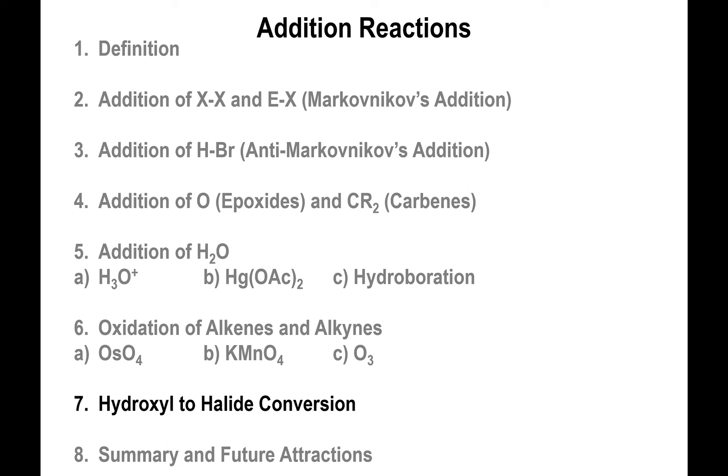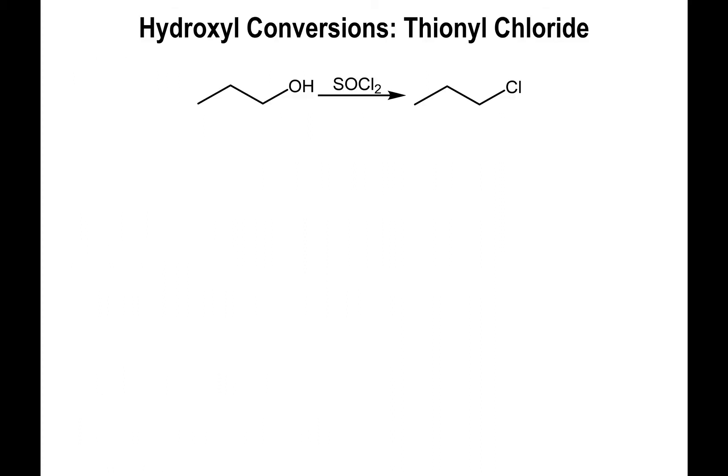We're back. We have one more topic to mention. This will be more important in the context of synthesis in general, more so than oxidations or treatments of alkenes. We've talked a lot about turning alkenes into alcohols — sometimes via Markovnikov additions, maybe anti-Markovnikov additions, and sometimes using oxidizing agents like potassium permanganate or osmium tetroxide. In any case, you end up with alcohols.